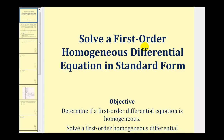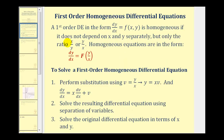Welcome to a lesson on solving a first-order homogeneous differential equation written in standard form. A first-order differential equation in the form dy/dx equals f of x comma y is homogeneous if it does not depend on x and y separately, but on the ratio of x to y or y to x. So we can say a differential equation is homogeneous if it can be written in the form dy/dx equals f of y/x or x/y.